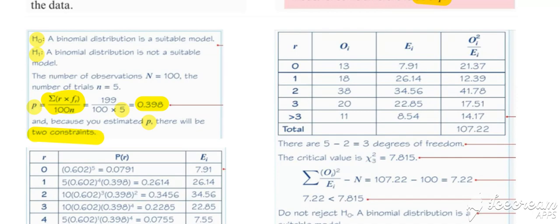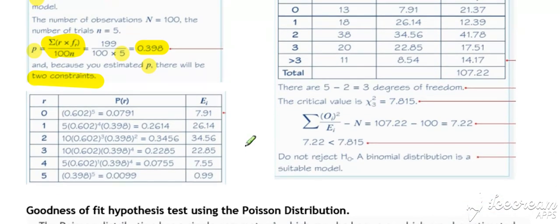We need to recalculate all of our expected values using the binomial distribution, which you can set up on your calculator to do in a table. We work out our expected values and then perform the hypothesis test for goodness of fit again.